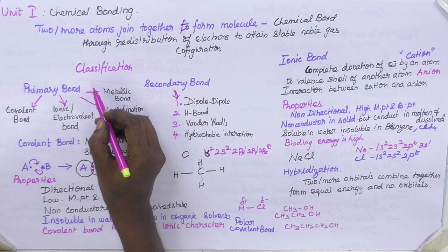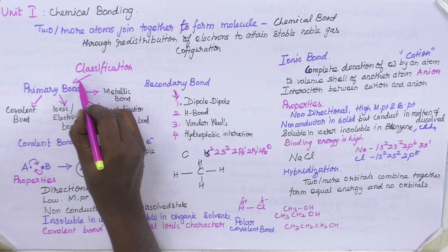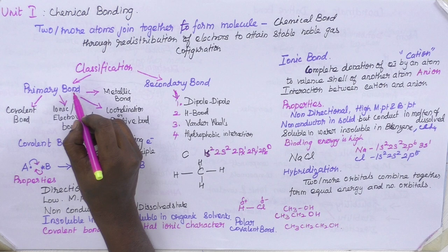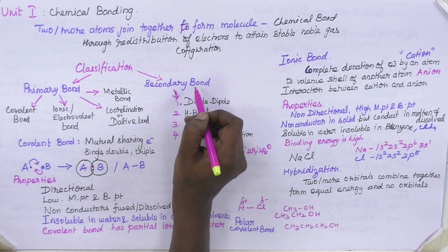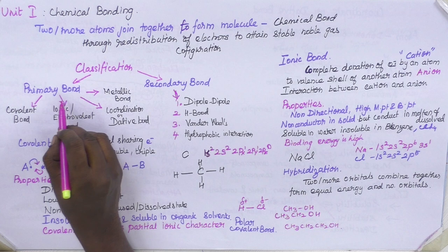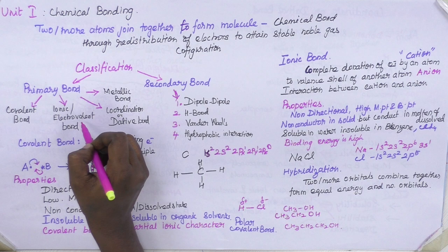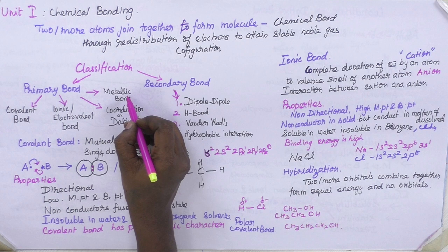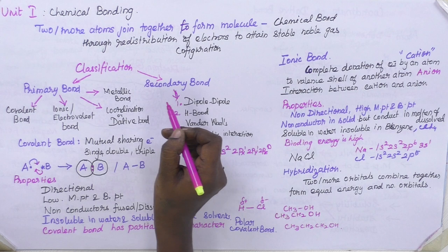We classify the chemical bond into two categories: primary bond and secondary bond. The primary bond is considered a very strong bond compared to the secondary bond. The secondary bond is weak in nature. The primary bonds include: first, covalent bond; second, ionic or electrovalent bond; third, coordination or dative bond; and fourth, metallic bond. The metallic bond is also considered strong compared to other weak bonds.